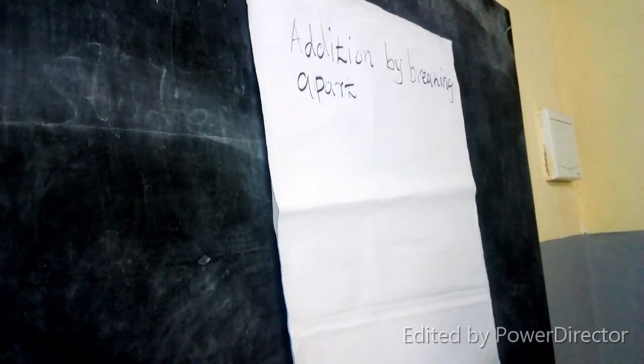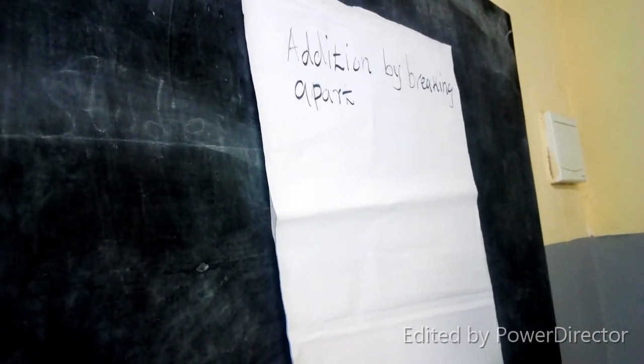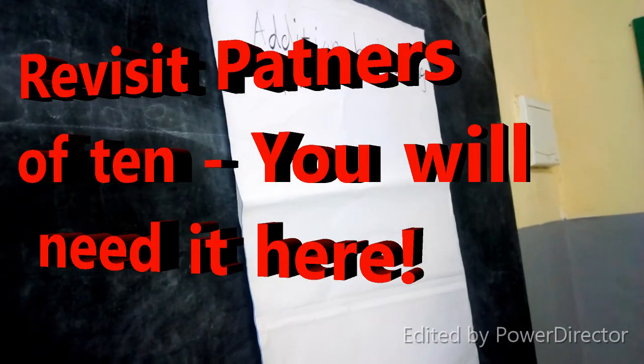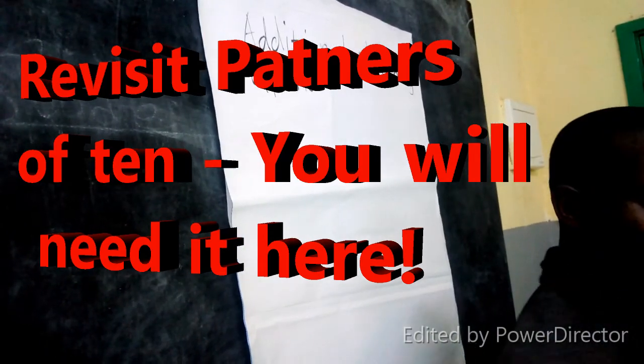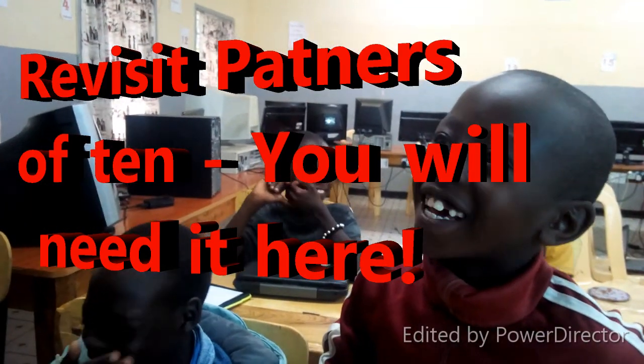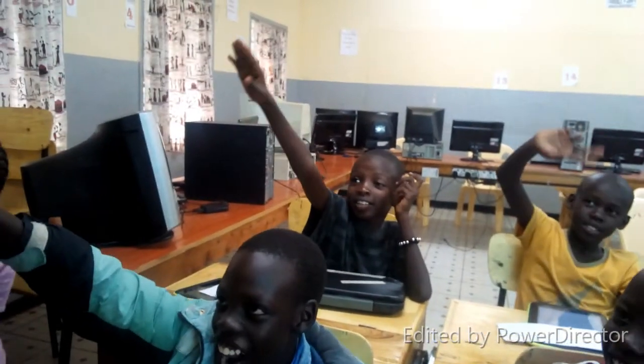Last time we learned about partners of 10. Can you give me two numbers that if I add I get 10? Start from the first. Emmanuel: 5 plus 5 is equal to 10. Correct, 5 and 5 gives us 10. That is very good.